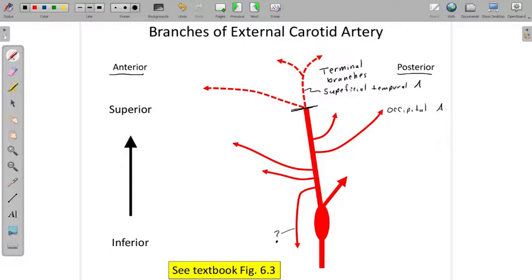Abbreviate artery throughout as A. We have parietal and frontal branches of that, the termination, an extension of the external carotid. Then we have the maxillary artery that we'll spend a fair amount of time on.